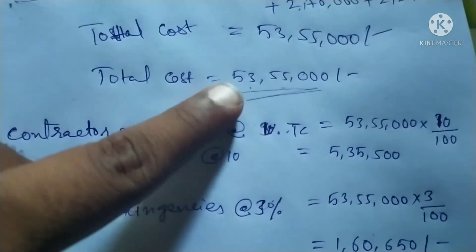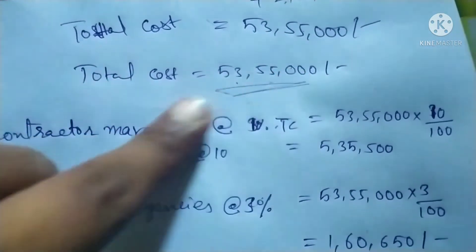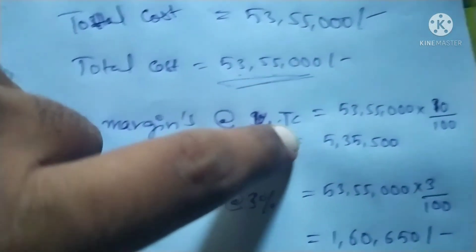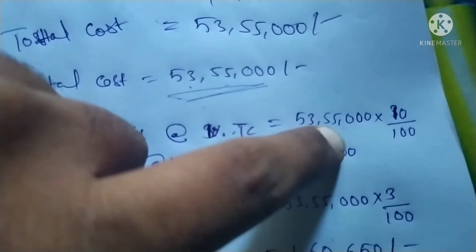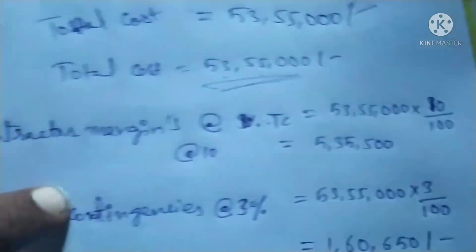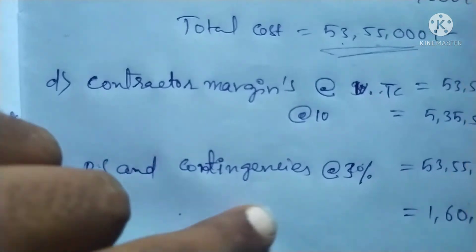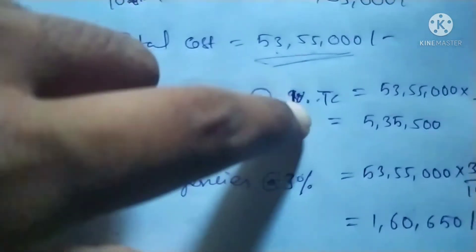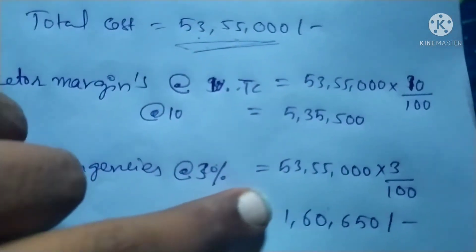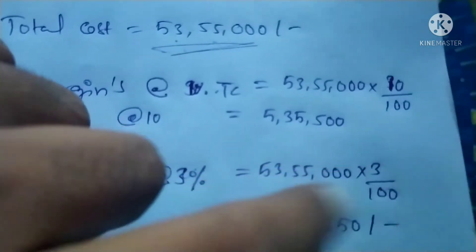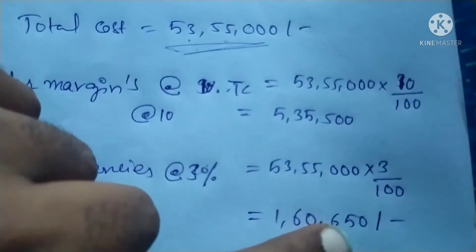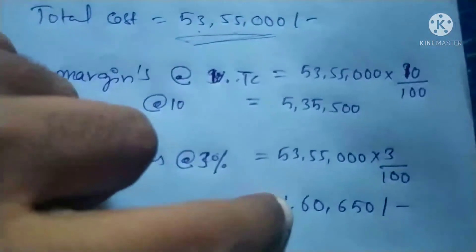Total cost is 53 lakhs 55 thousand rupees. Contract margin is 10% of total cost: 53 lakhs 55 thousand into 10 divided by 100 equals 5 lakhs 35 thousand 500 rupees. PSN contingency charges is 3% of total cost: 53 lakhs 55 thousand into 3 divided by 100 equals 1 lakh 60 thousand 650 rupees.